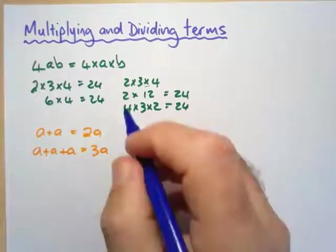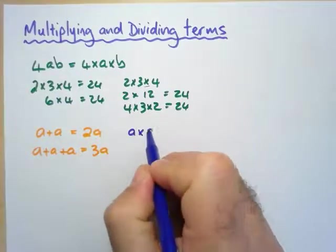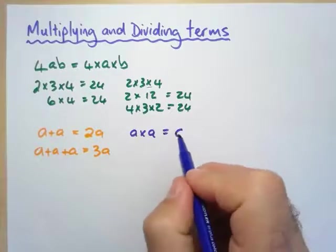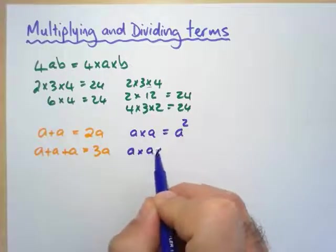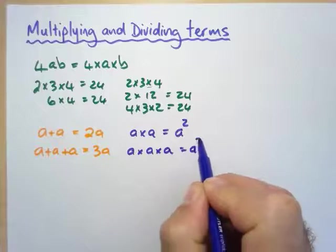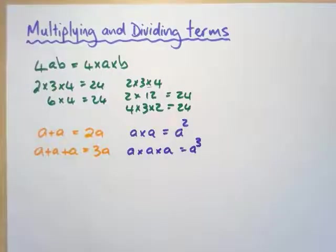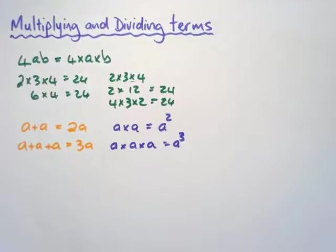However, if I'm multiplying, if I say a times a, that becomes a squared. And a times a times a equals a cubed. So that is what you need to know about multiplying.